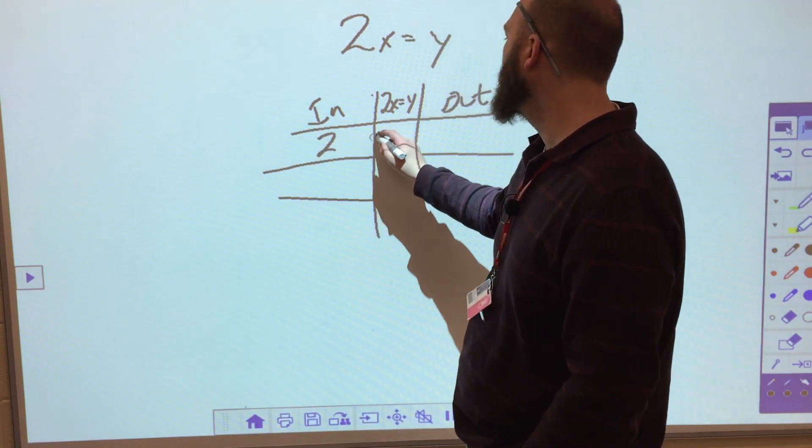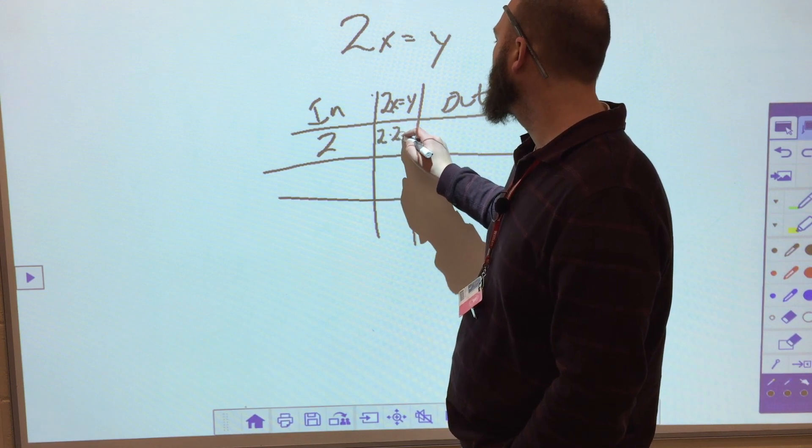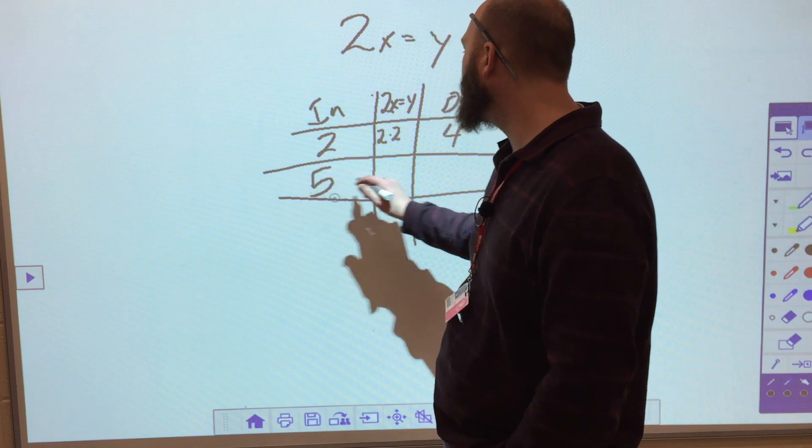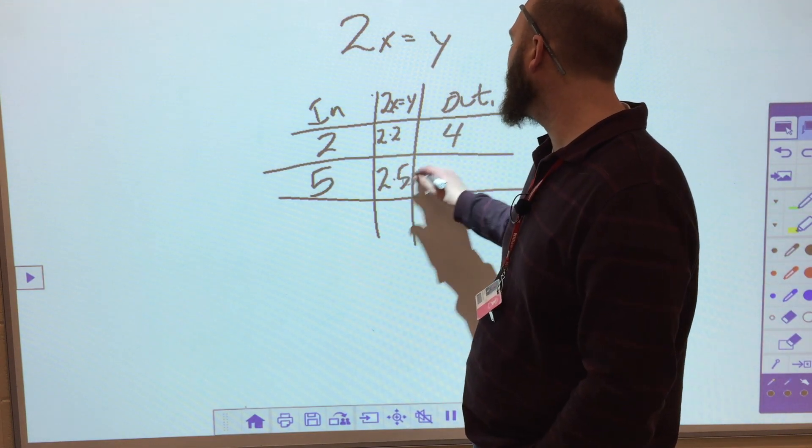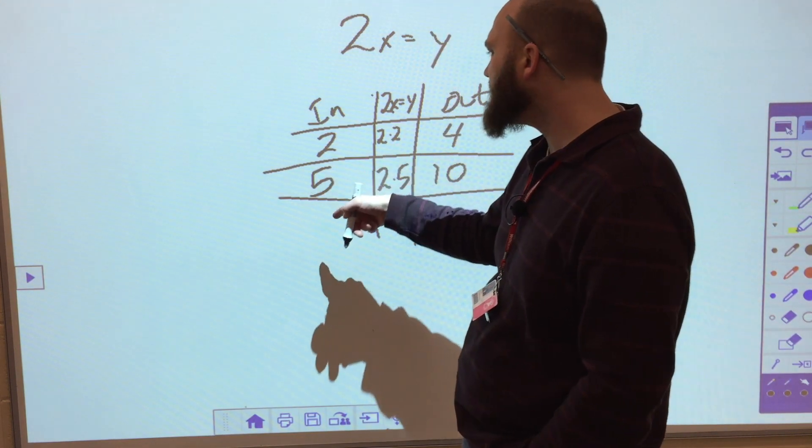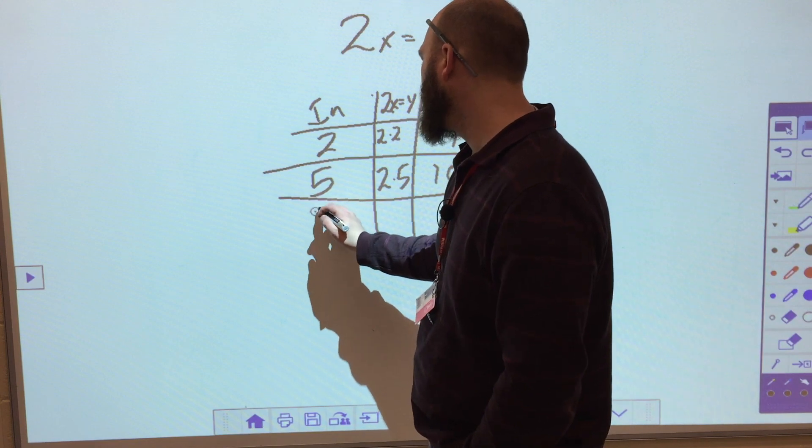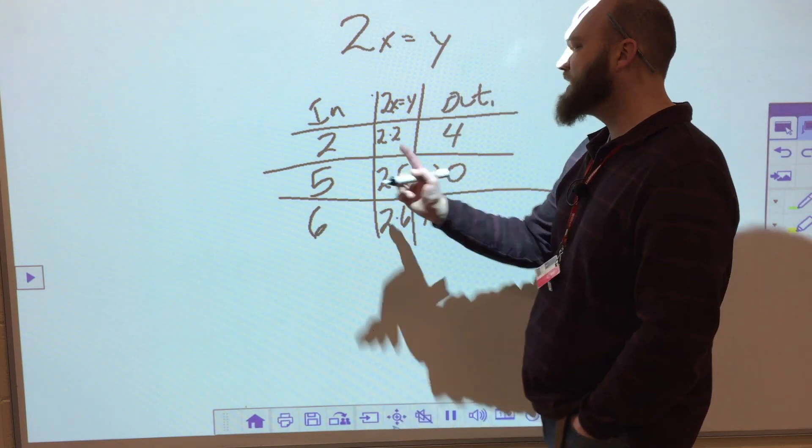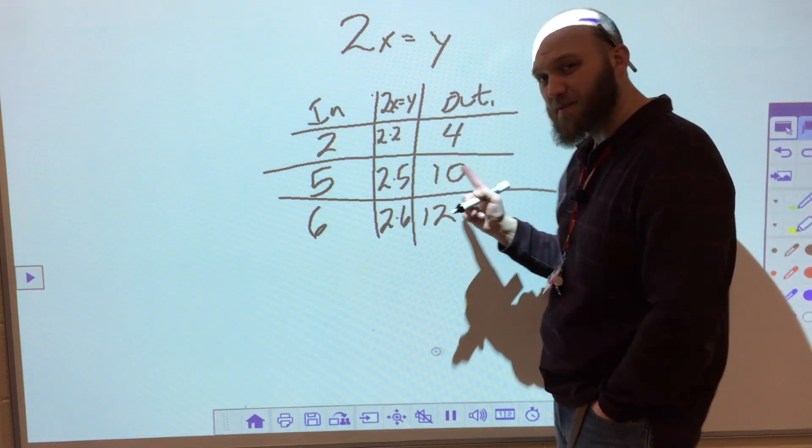So if my in is 2, 2 times 2, and that would then be 4. If my in is 5, this would be 2 times 5, and that would be 10. And if my in is 6, that would be 2 times 6, and that would be 12. So this is my independent variable. This is my dependent variable.